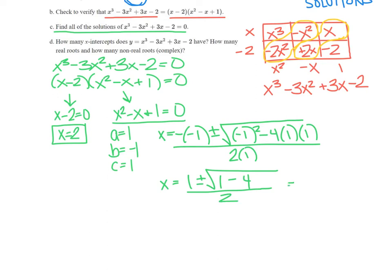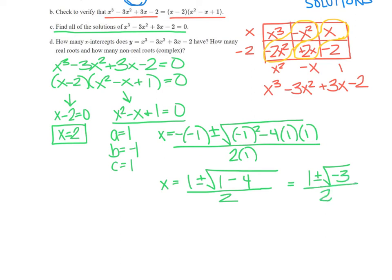And so when we simplify that, we get 1 plus or minus the square root of negative 3 all over 2. So a couple more things to finish simplifying. We have x equals, we're going to want to simplify that square root of negative 3. So x equals 1 plus or minus, we can simplify that to be i root 3, because that factor of negative 1, we can take its square root to get i all over 2.